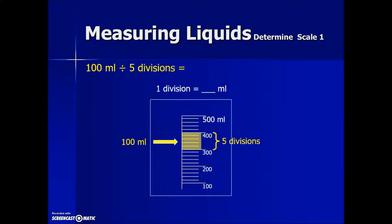We take our interval, 100 milliliters, divided by the number of tick marks which was five, which gives us a value of 20 milliliters per division.